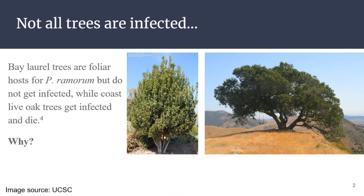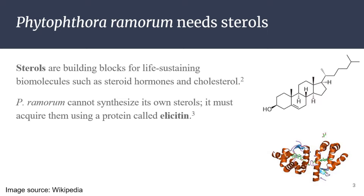One of the interesting observations that previous studies have found is that not all trees get infected by P. remorum. Bay laurel trees act as foliar hosts, which means that P. remorum can survive on the leaves of the bay laurel trees but cannot actually infect the bay laurel tree and cause it to die. That isn't the case when we look at oak trees like the coast live oak, because coast live oak trees readily get infected and will die when exposed to P. remorum.